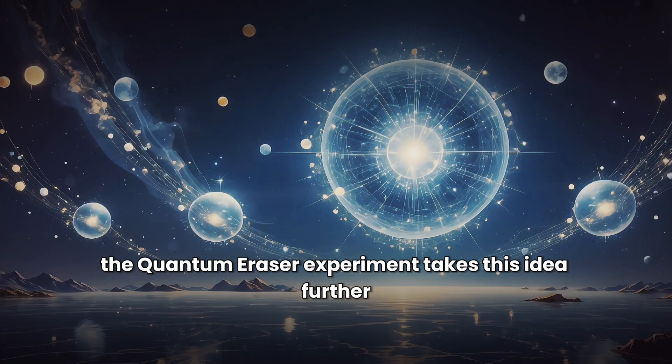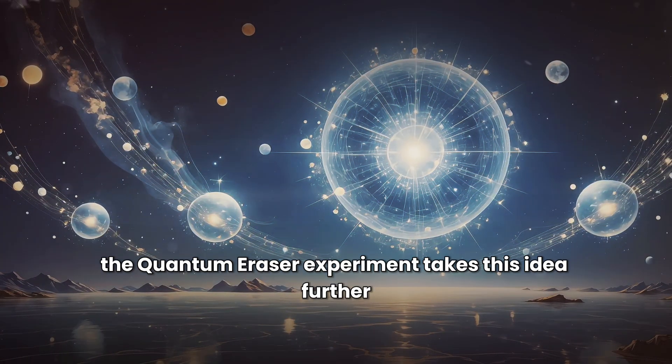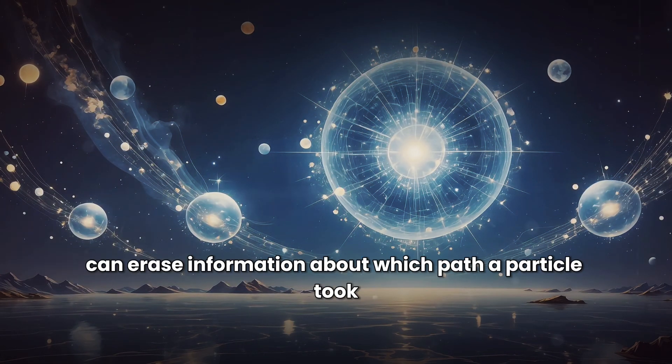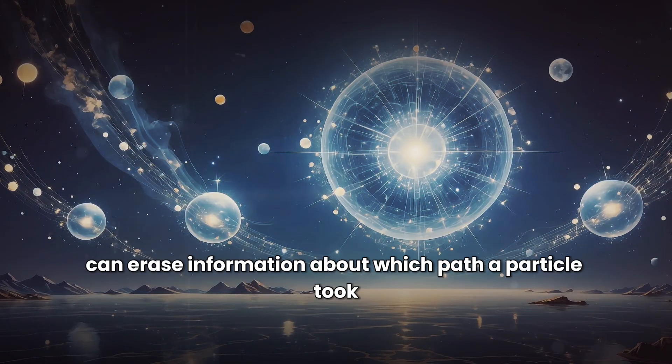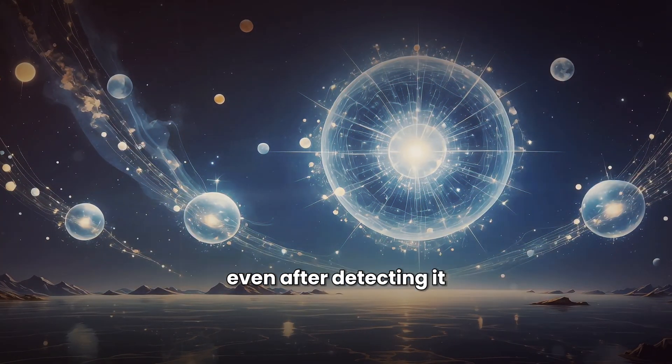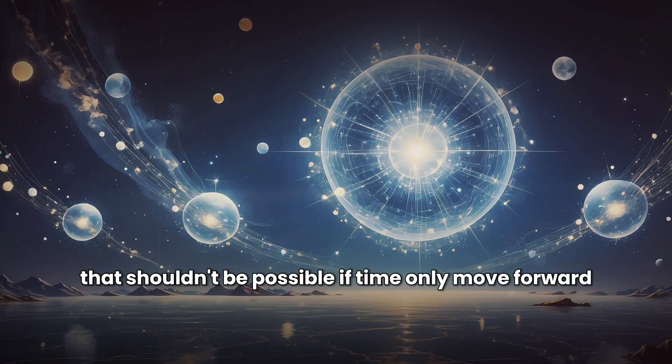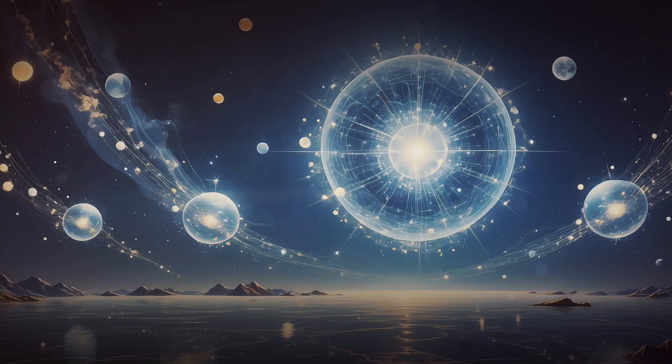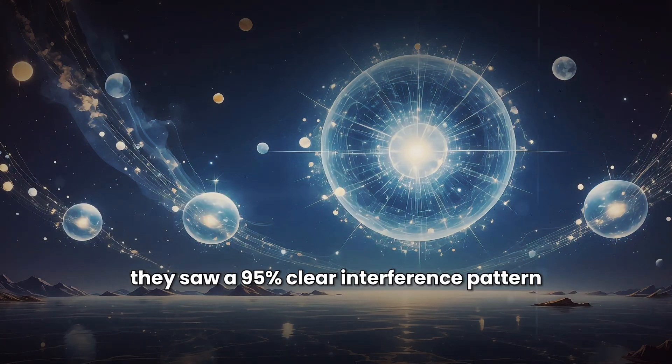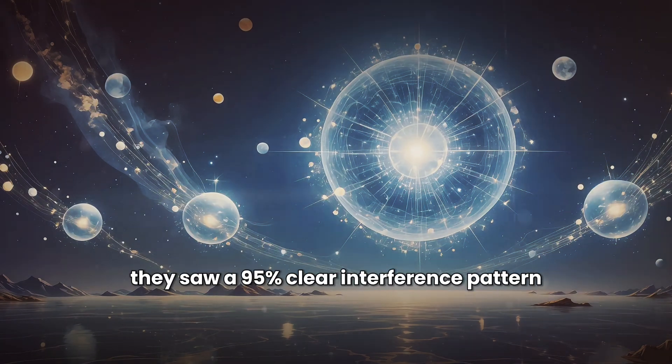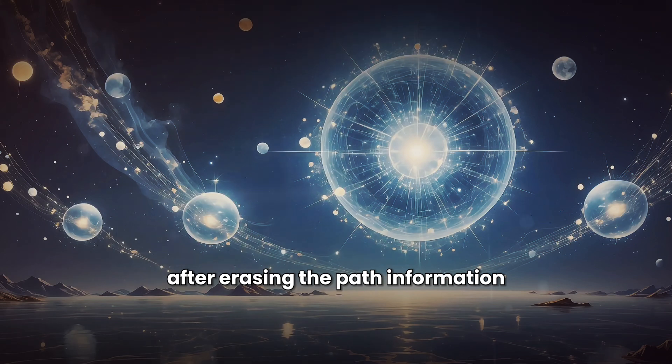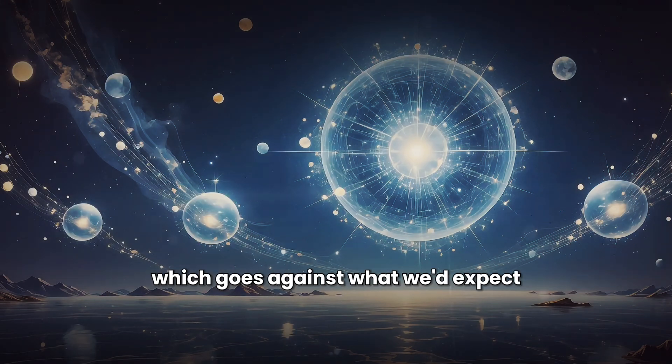The quantum eraser experiment takes this idea further. In this one, scientists can erase information about which path a particle took, even after detecting it. This creates interference patterns that shouldn't be possible if time only moved forward. In one version, they saw a 95% clear interference pattern after erasing the path information, which goes against what we'd expect.